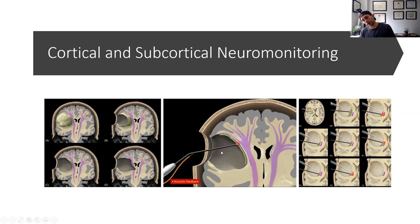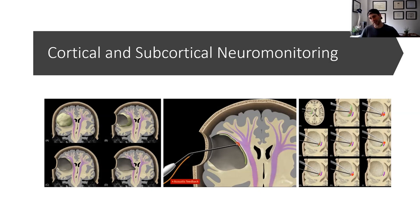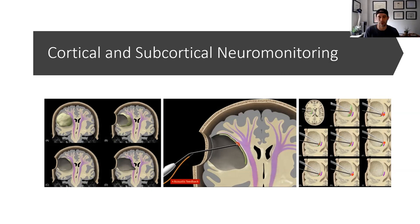Traditionally, you would operate, operate, operate, stop, put a probe down, stimulate, operate, operate, operate, put a probe down, stimulate — until you get close enough. The general consensus is that about one milliamp of stimulation corresponds to about one millimeter of distance, so no one really goes beyond the five millimeter mark, but you can push to three millimeters in some tumors — basically just a couple layers of cells.